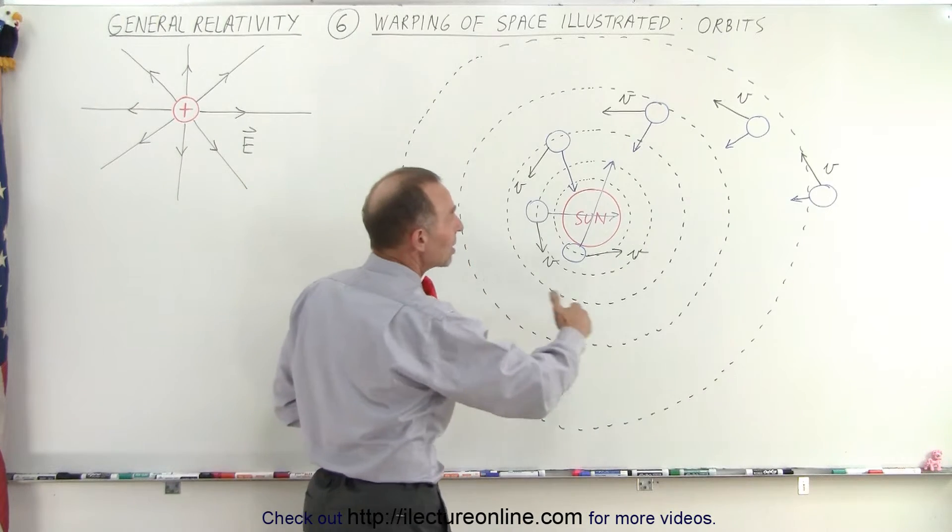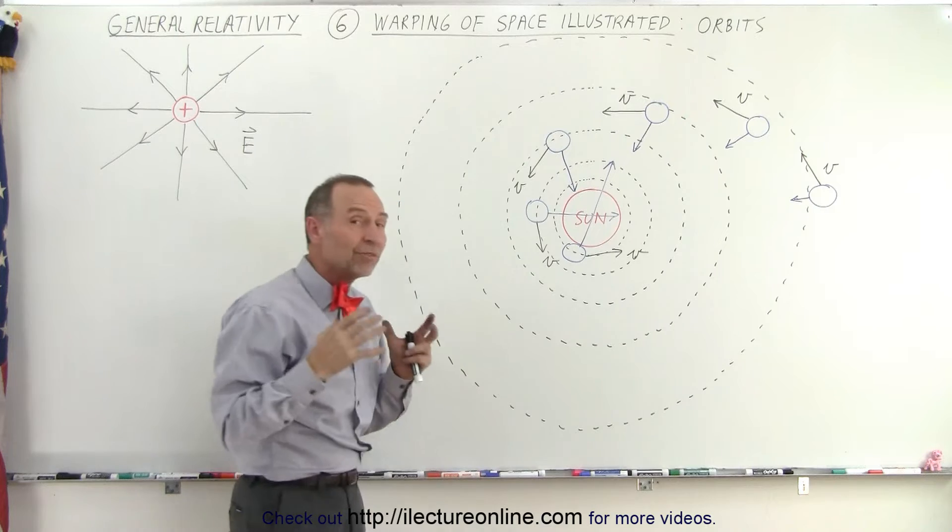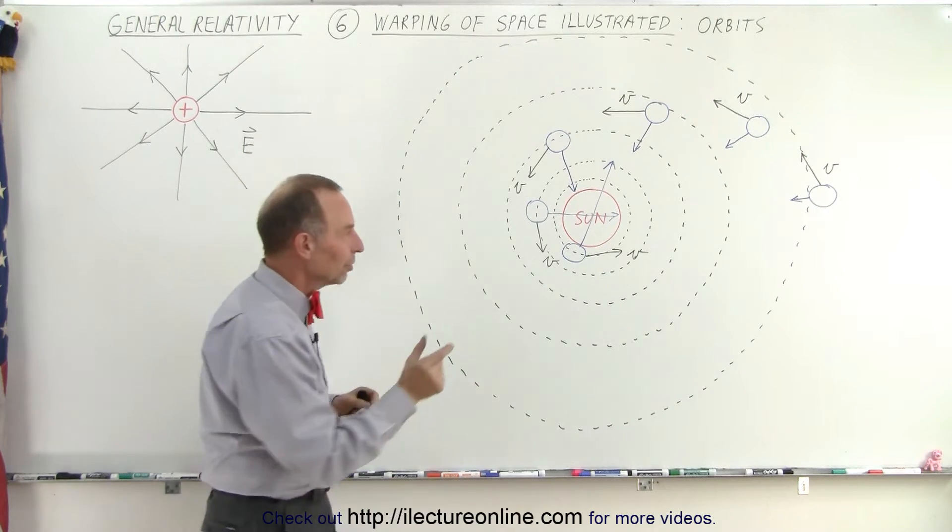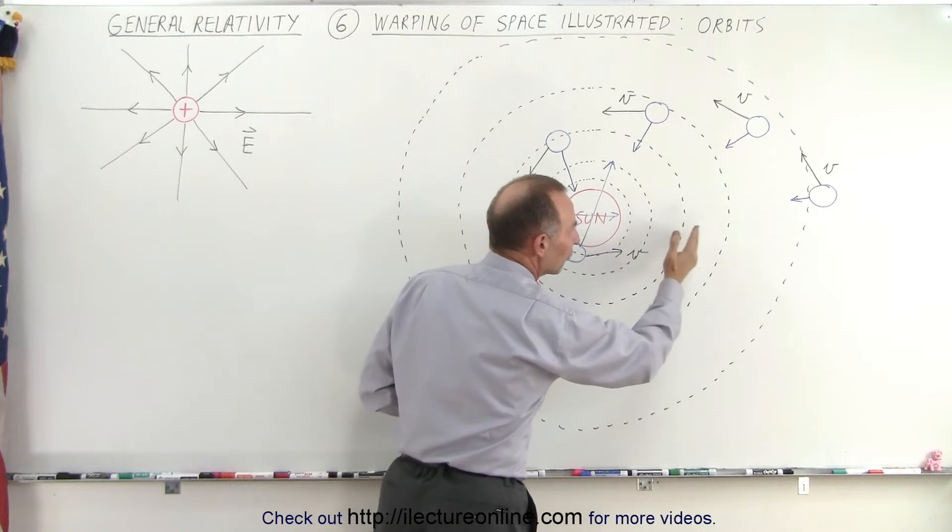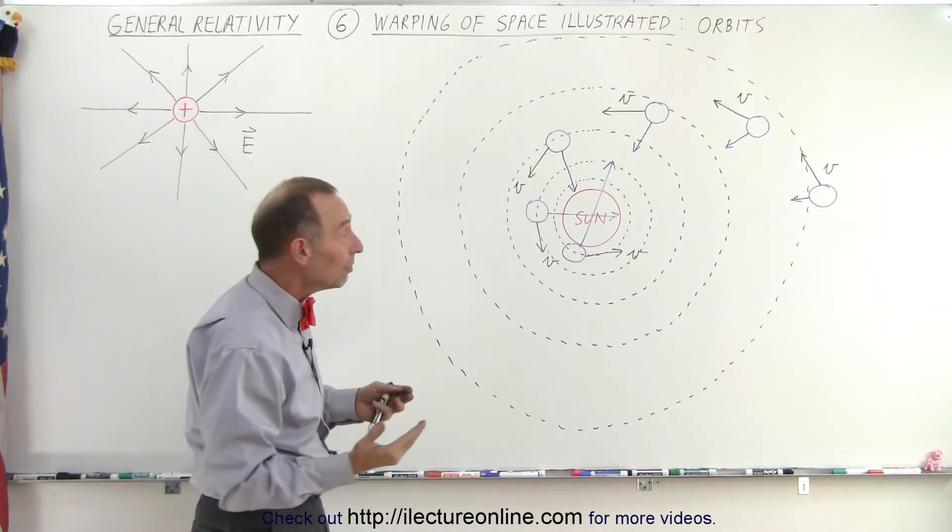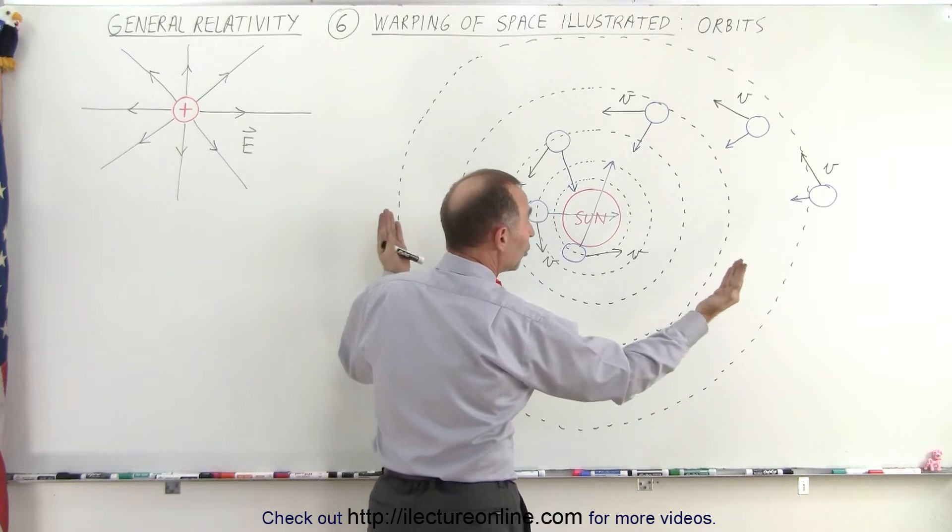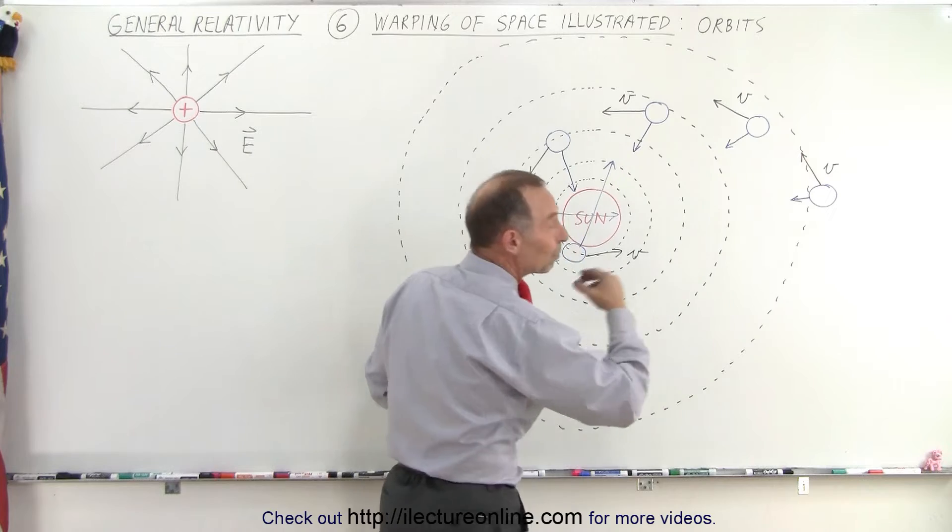What we try to present here is that the little circles with the dashed lines are representative of the strength of the field. When the lines are closer together, the field is stronger. When the lines are farther apart, the field is weaker. Another way of looking at it is, the closer you get to the sun, the more space is curved. The farther you get away from the sun, the less space is curved.